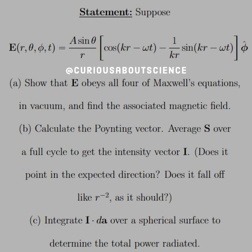The statement is, it looks like a spherical waveform of the electric field is A sin θ over r [cos(kr - ωt) - 1/(kr) sin(kr - ωt)] in the φ direction. Part A: Show that E obeys all four of Maxwell's equations in a vacuum and find the associated magnetic field.